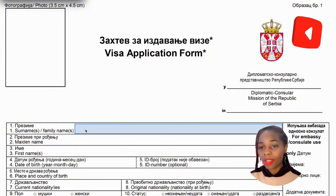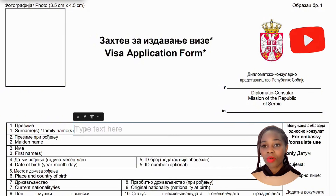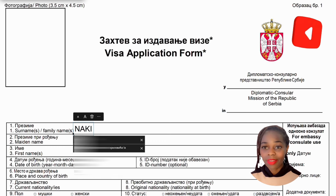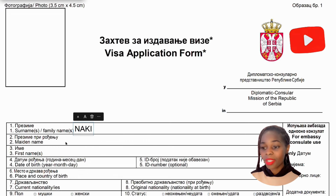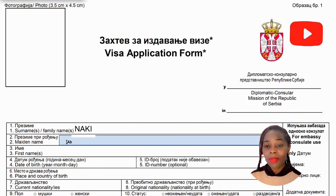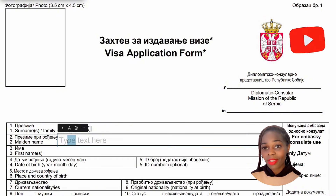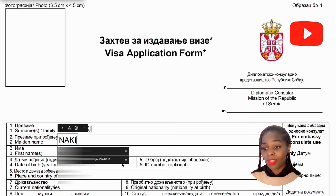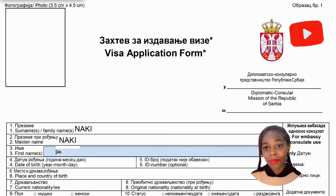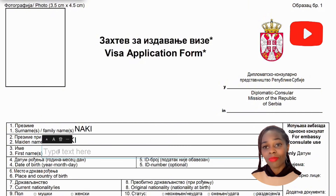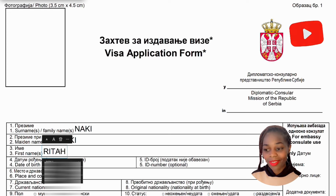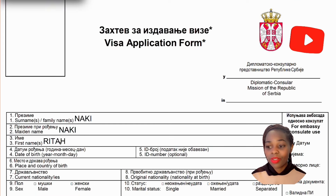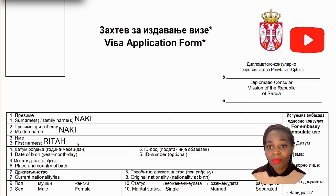Slot number one is the surname. For example, if you're called Rita Nachi, your surname is Nachi. Slot number two is the maiden name — the name you had before you got married. In this case it's the same as the surname, which is Nachi. Slot number three is your first name, which here is Rita — that's the name given at church, like a biblical name.